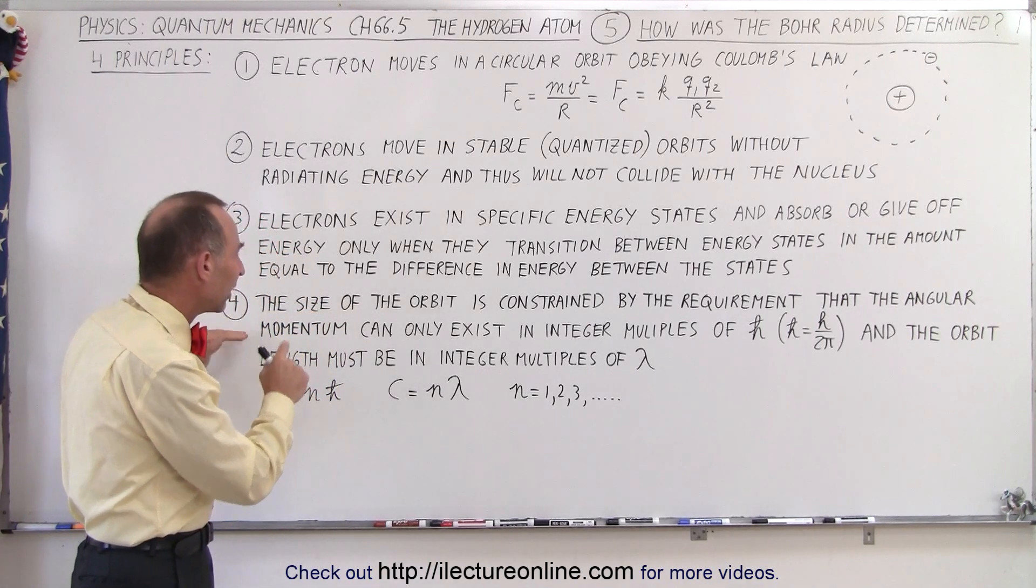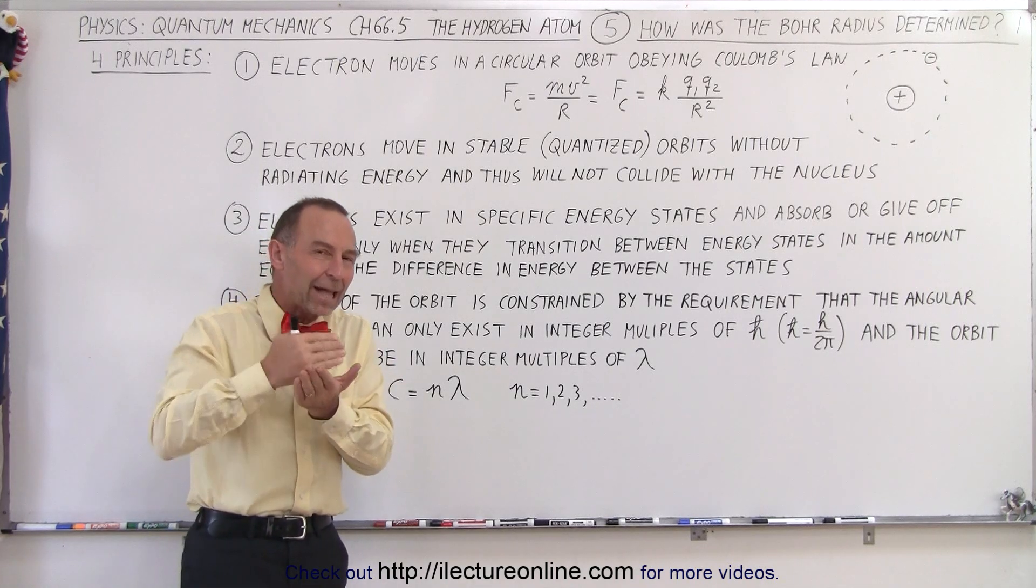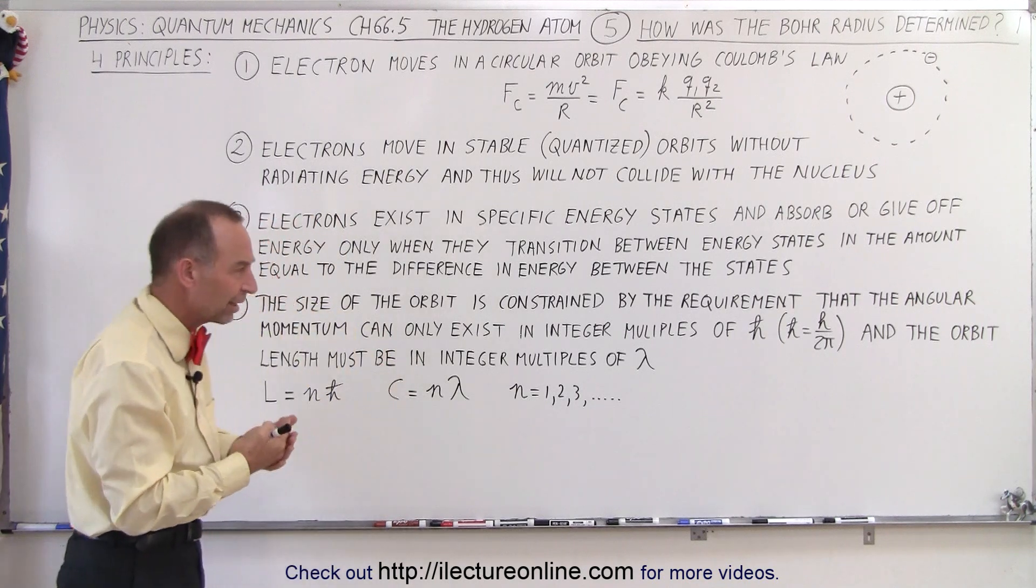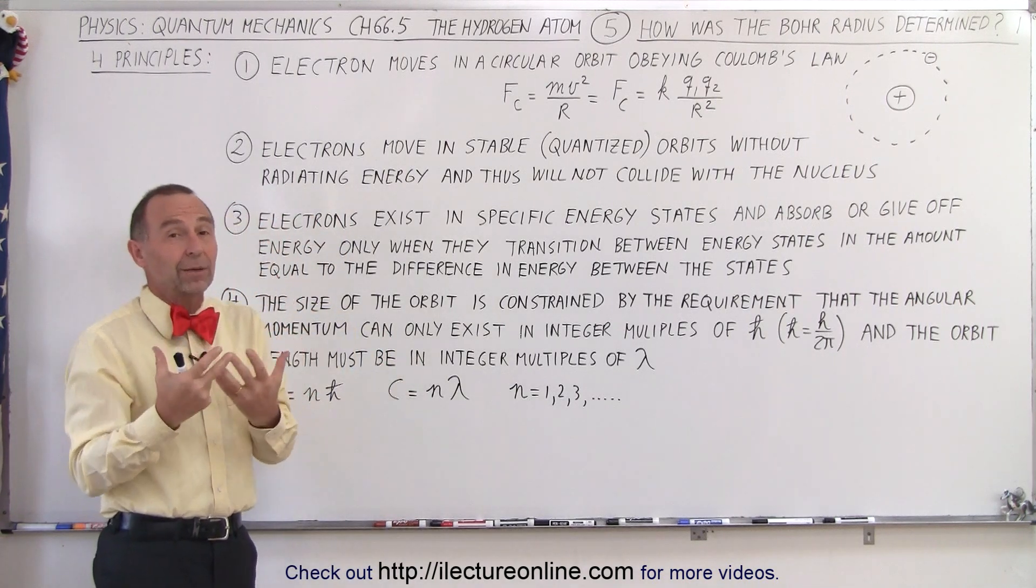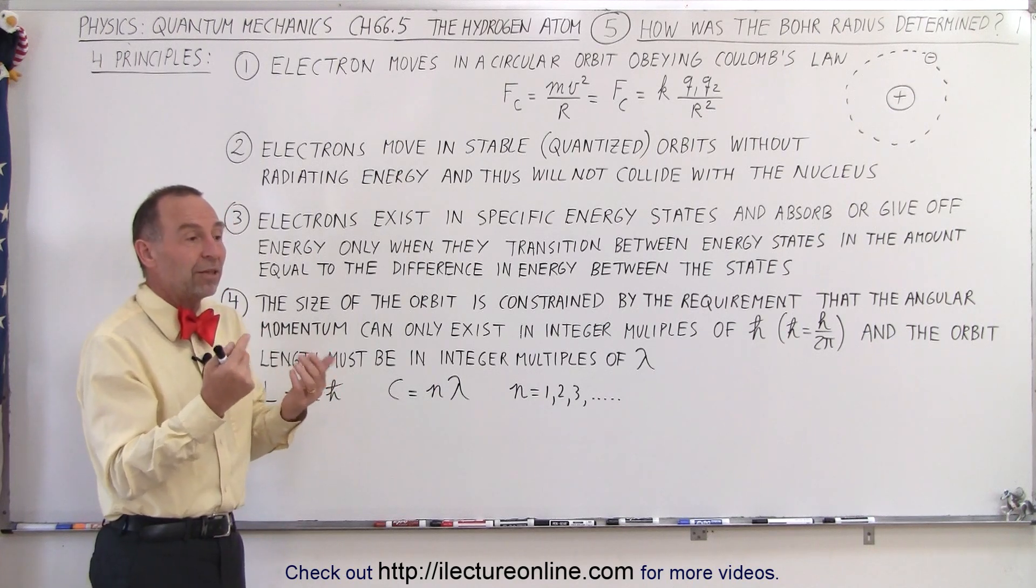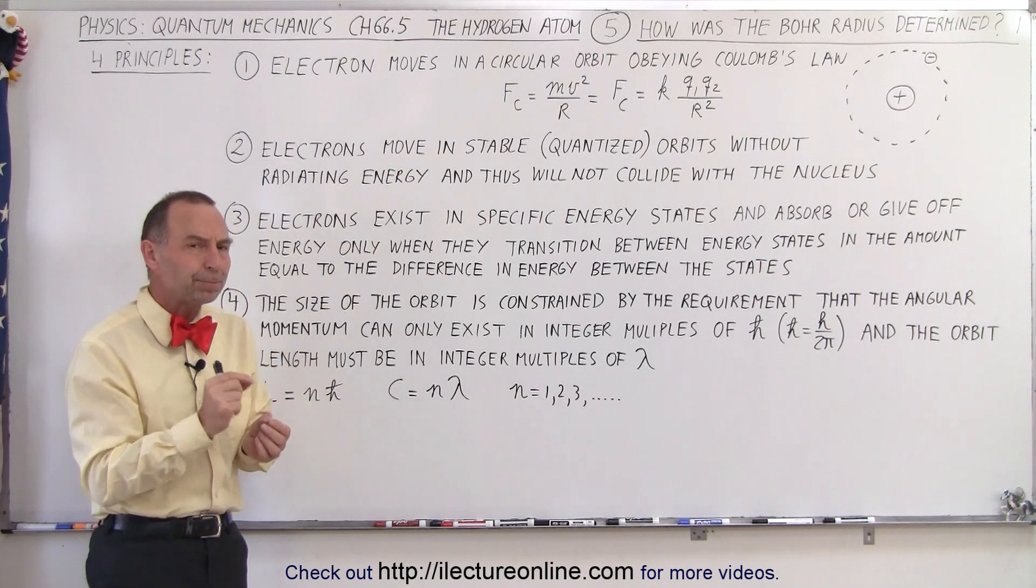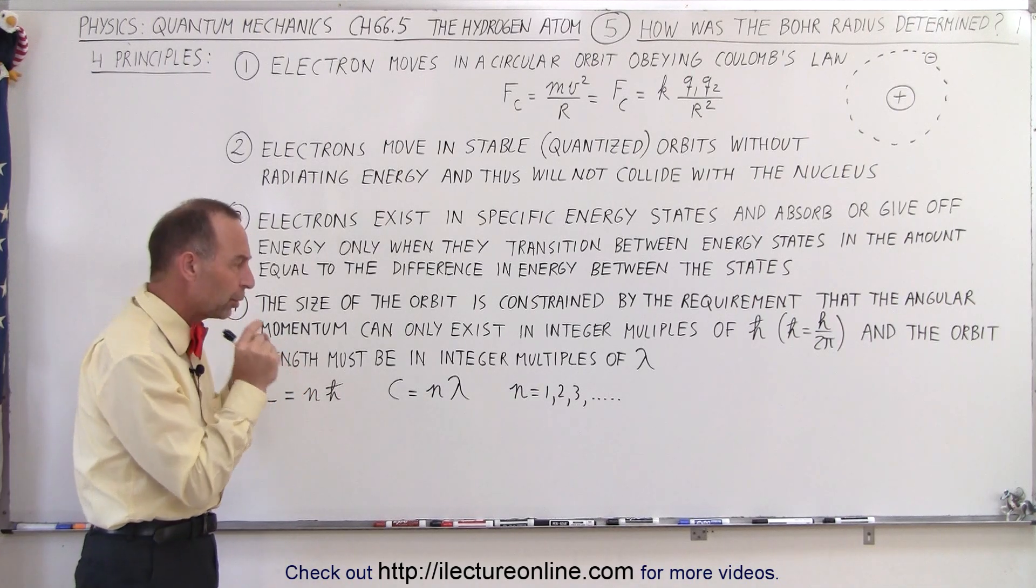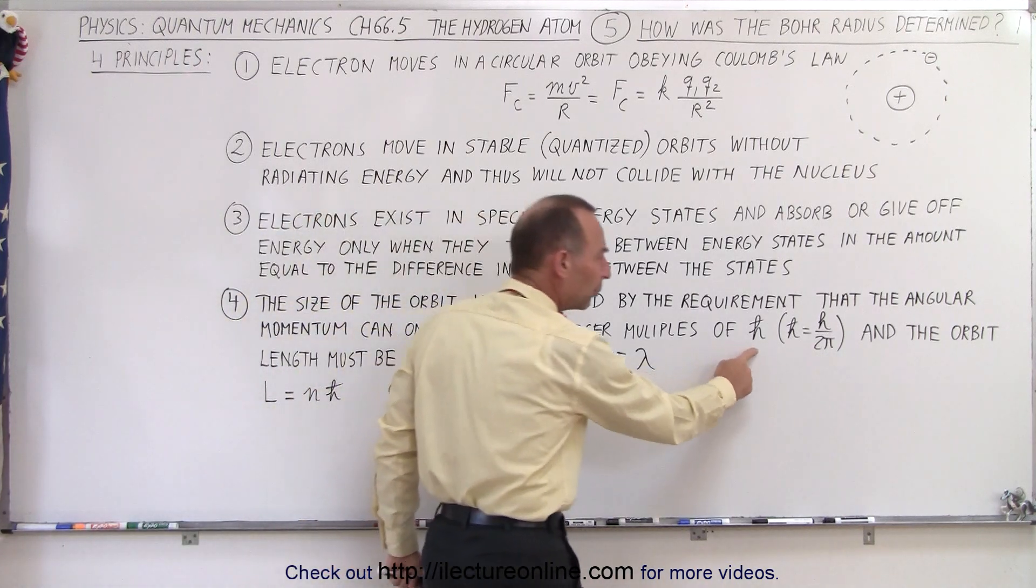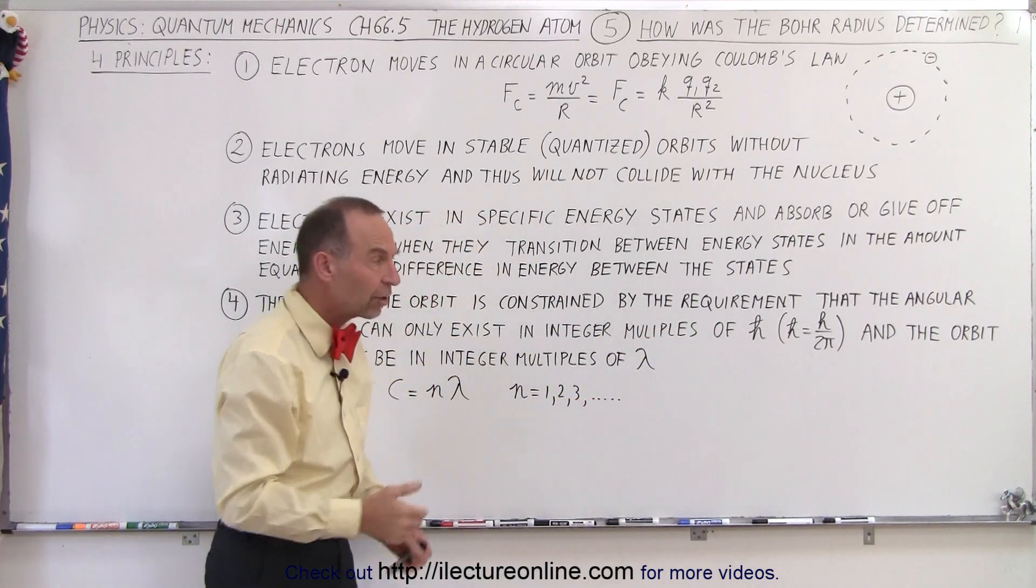Finally, they determined that the size of the orbit is constrained by the requirement that the angular momentum itself is also quantized, which was an interesting stretch when it comes to physics, because we would think of angular momentum as being continuous and continually changing. But they said that when it comes to the atom, the angular momentum can only exist in energy steps of h-bar, where h-bar equals h divided by 2π. Of course, h is Planck's constant.